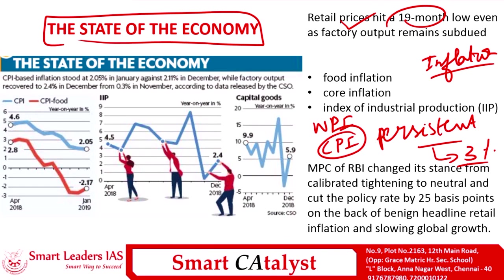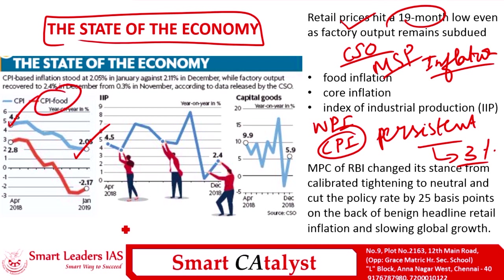The Consumer Price Index measures inflation from the consumer's perspective. It provides an estimation of price changes in a basket of goods and services representative of consumption expenditure. This data is published by the CSO — the Central Statistical Office — which is under the Ministry of Statistics and Programme Implementation. According to the release, last year the CPI value was 4.6%, which has now come down to about 2%. For food inflation separately, there is the CFPI index, also released by CSO.